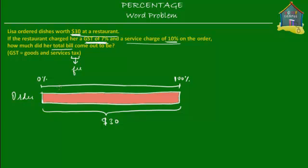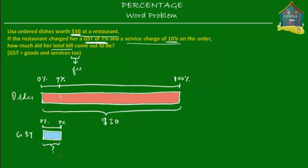7% must be somewhere over here on the scale. So if this is 7% of the cost of the order, this amounts to the GST. We extend it down to make a block of this size — this is the GST, colored blue. It's 7% of $30, and we don't know what this equals in dollars yet, so we'll put a question mark.